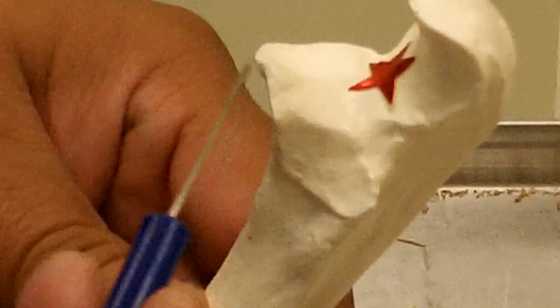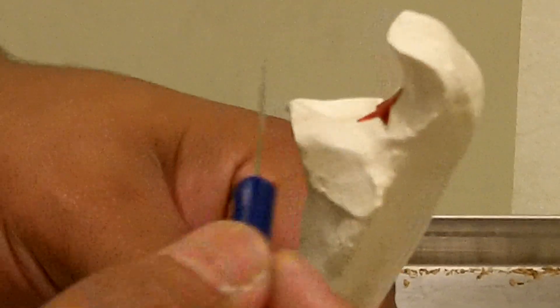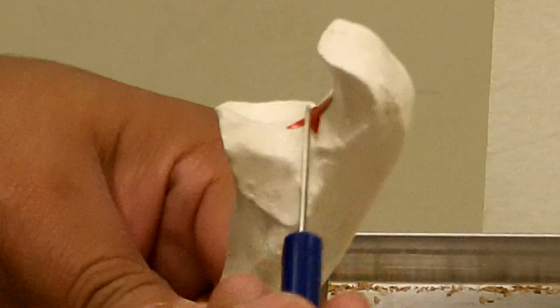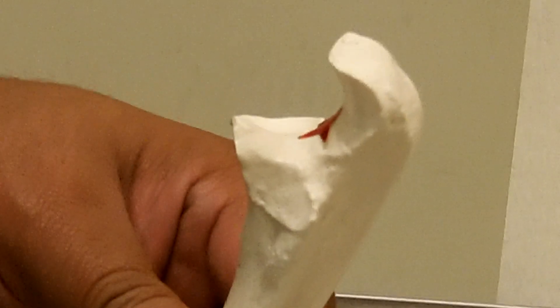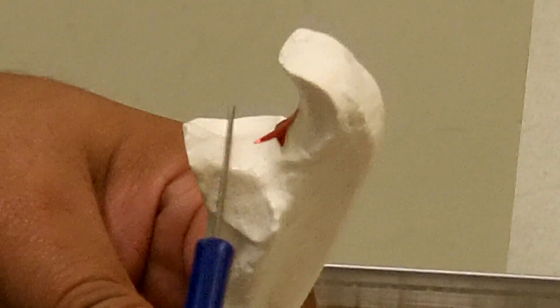Over here we have the coronoid process. It kind of sticks out like a duck bill. Here we have what is called the trochlear notch, also known as the semilunar notch. Over here we have the radial notch.